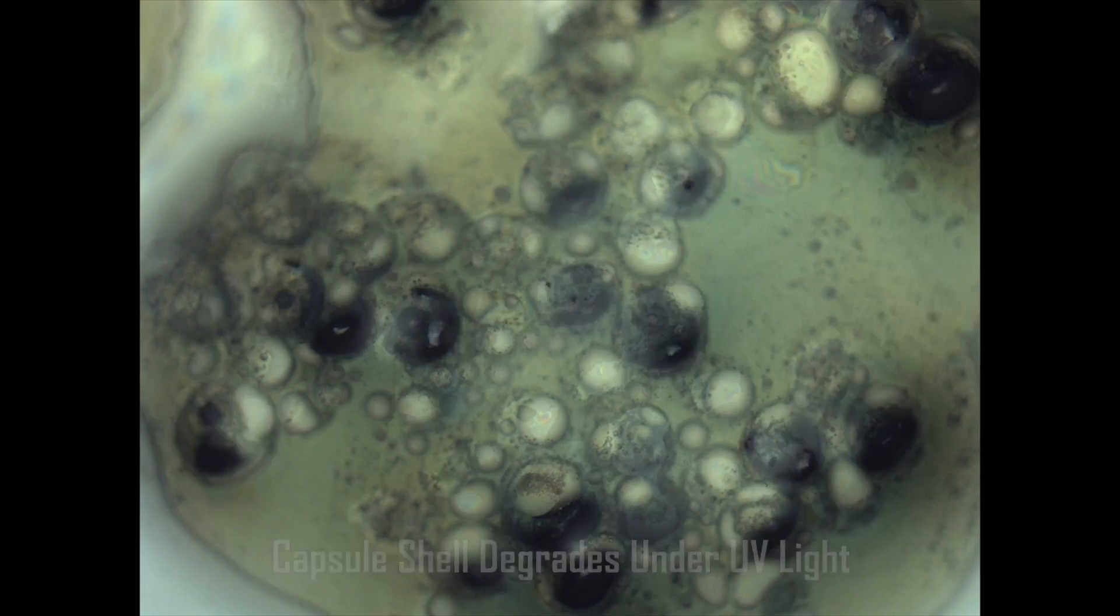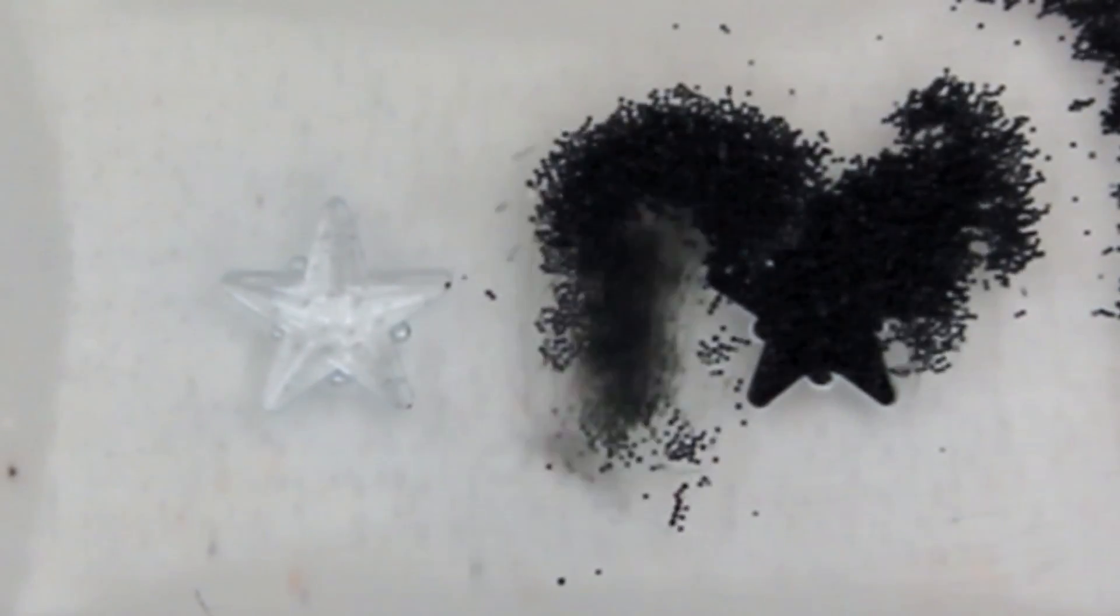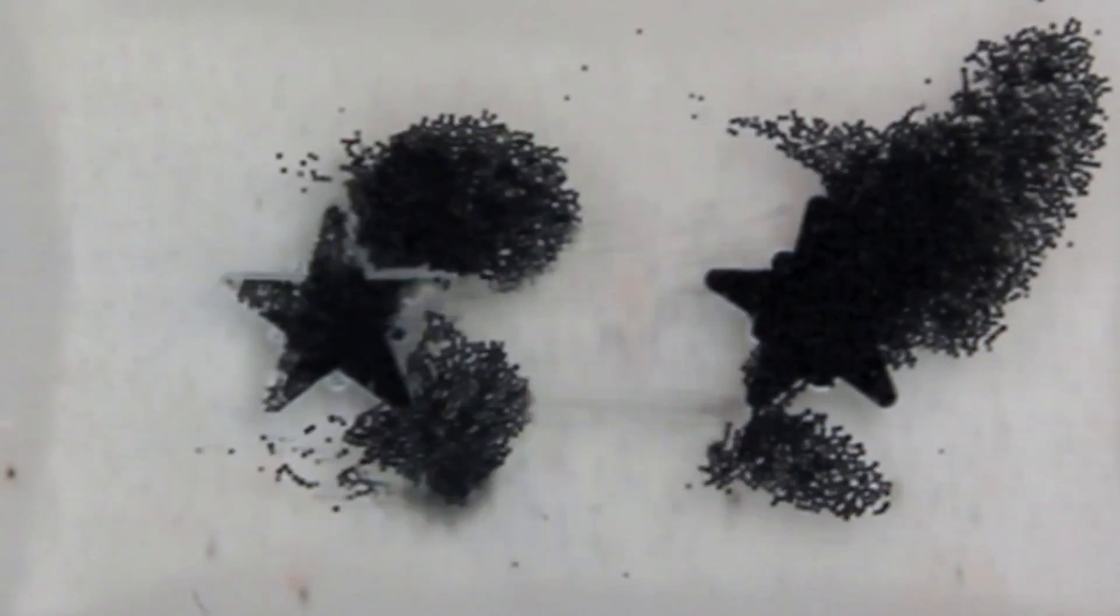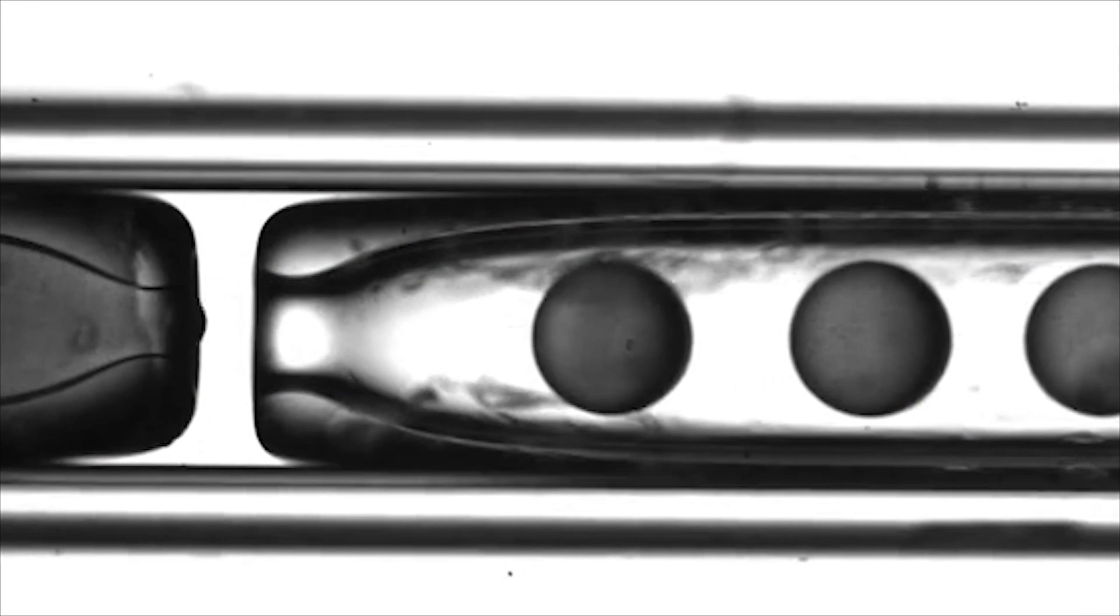We can also control where microcapsules go by making them magnetic, driving them into any shape we want. These tiny containers help make futuristic materials that respond to problems in their environment.